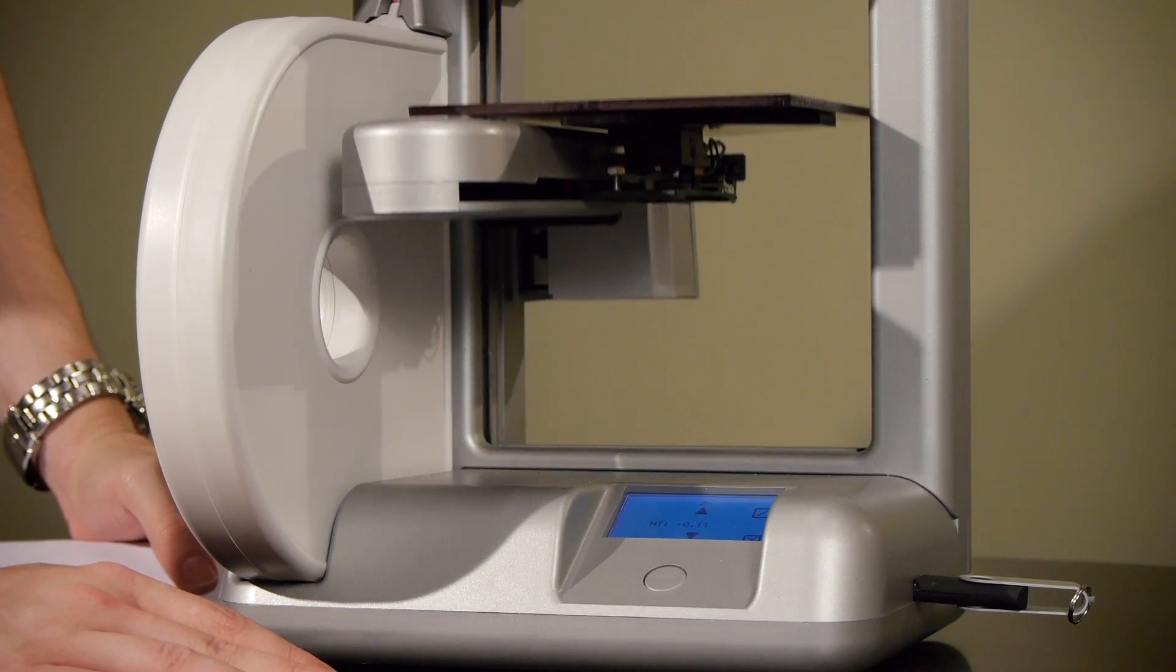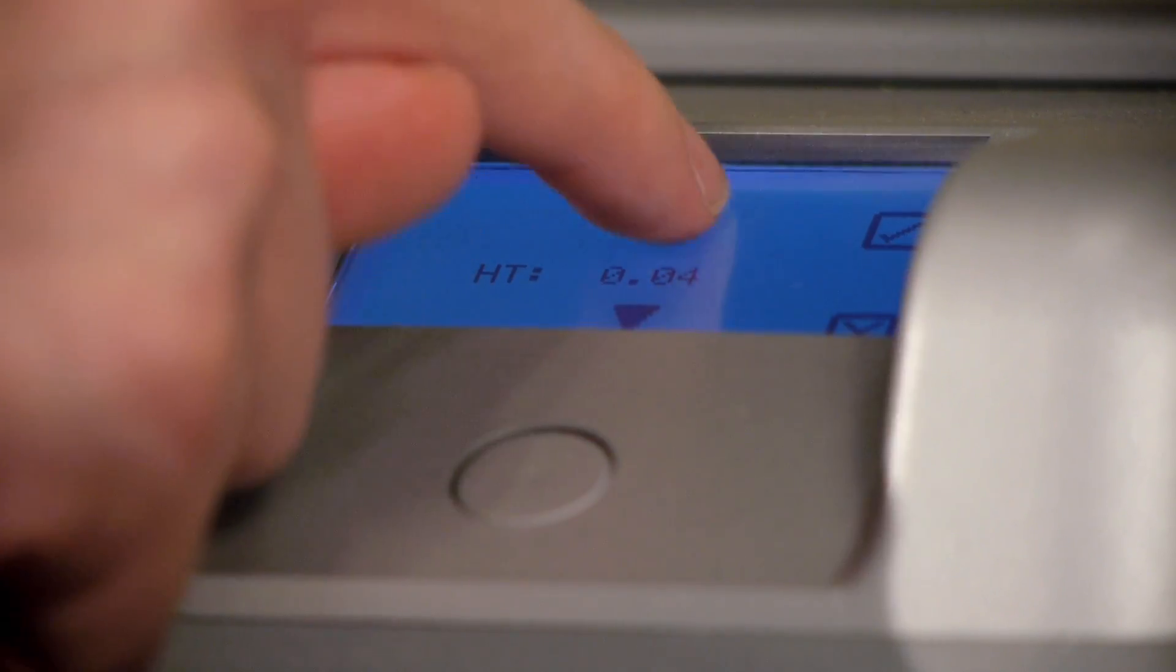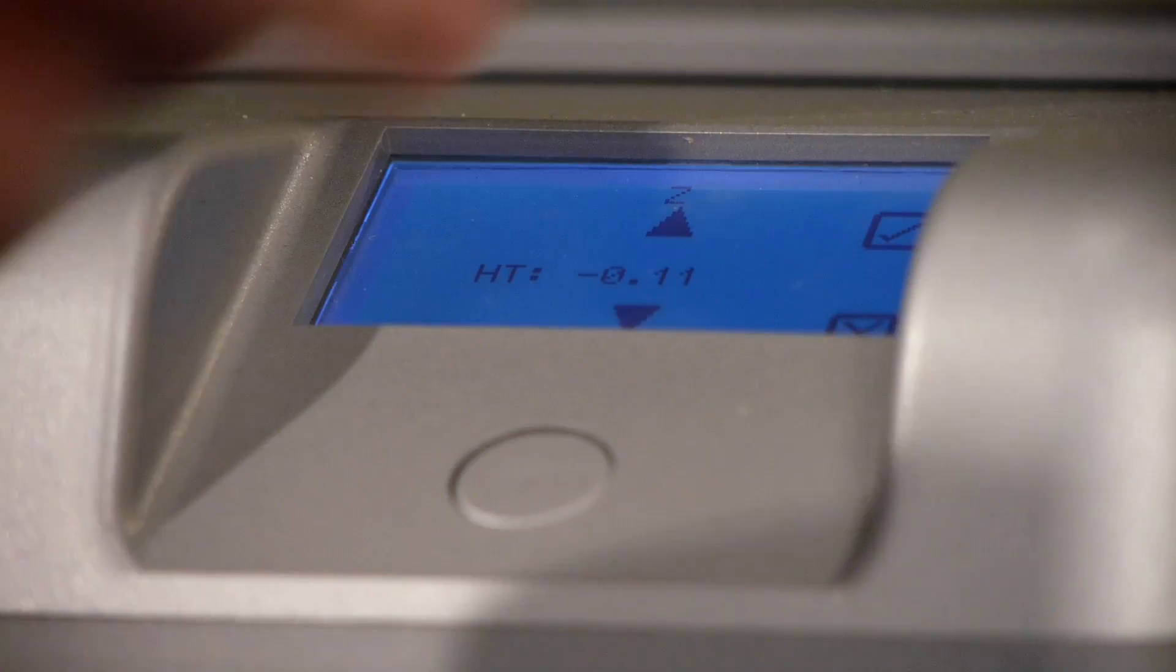Put a regular piece of paper folded in half on the print pad, and use the up and down arrows to let the paper just begin to move freely like this. Press the check mark to save the setting.